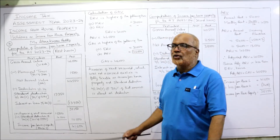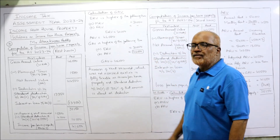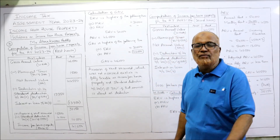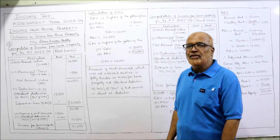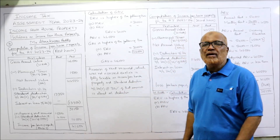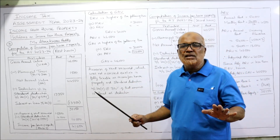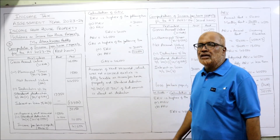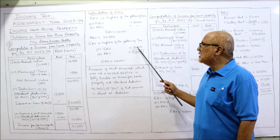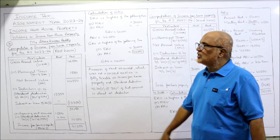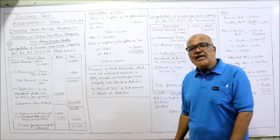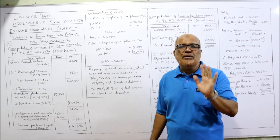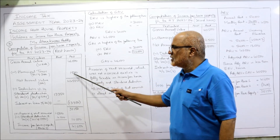For the first house, the Expected Rental Value (ERV) is the higher of MRV and FRV. MRV is 30,000; FRV is not given, so ERV is 30,000. The Actual Rental Value (ARV) is 46,000 — there is no vacancy allowance for the first house. GAV is the higher of ERV (30,000) or ARV (46,000), so GAV is 46,000. Municipal taxes are 3,000, but only 50% is borne by the owner, so 1,500 is deducted.